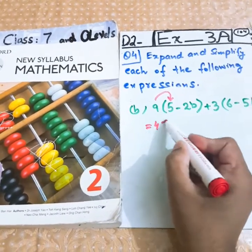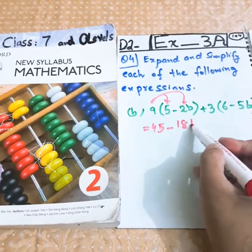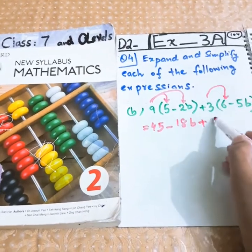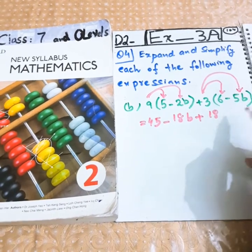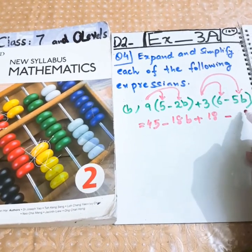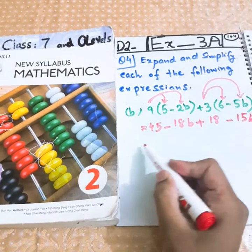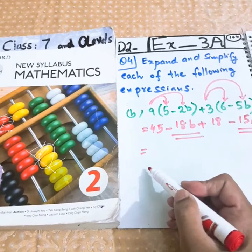9 times 5 is 45, minus 9 times 2 is 18b. Now plus 3 times 6 is 18, because of plus outside of the bracket, no sign is changed. Minus 3 times 5 is 15b. Here is 18b, here is minus 15b. These will be written together.